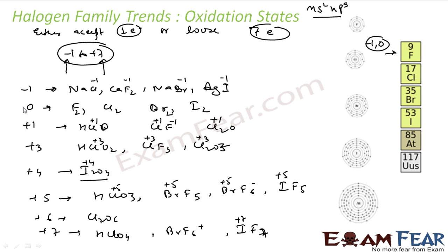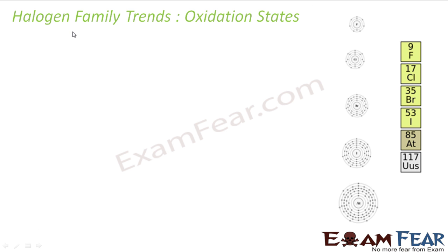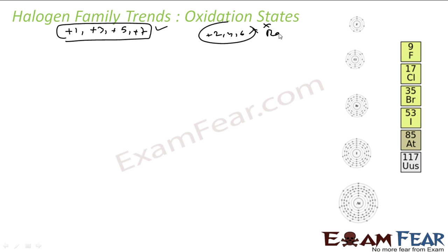So we have almost 0, minus 1, plus 1, plus 3, plus 4. Plus 2 we don't have. Plus 4 and plus 6 are not very common. Generally we have minus 1, 0, plus 1, plus 3, plus 5, and plus 7. Plus 2, plus 4, plus 6 are very rare. The question is why are plus 1, plus 3, plus 5, and plus 7 so common while plus 2, plus 4, and plus 6 are rare? Let's see.